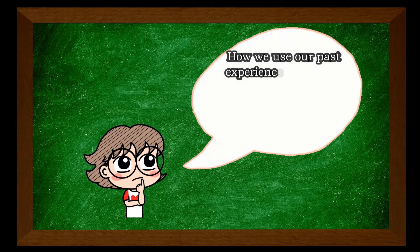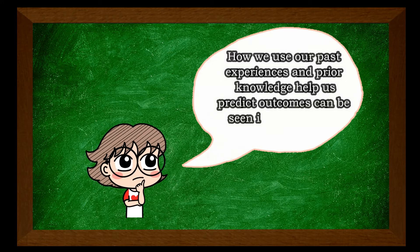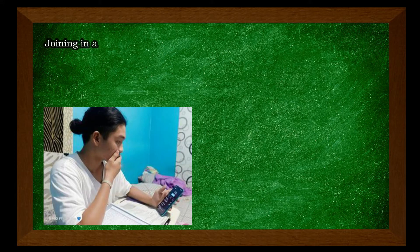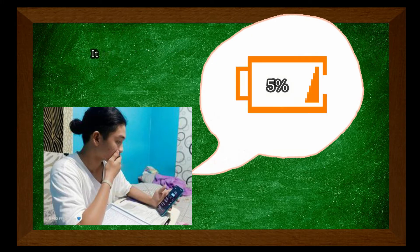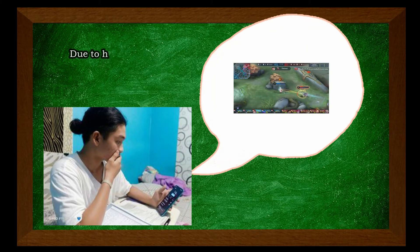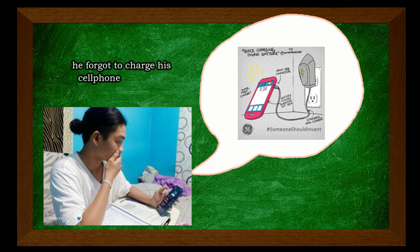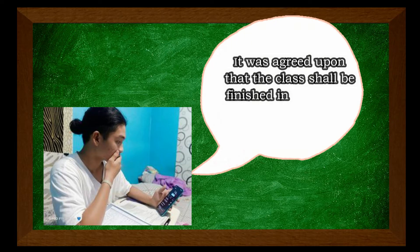How we use our past experiences and prior knowledge helps us predict outcomes can be seen in the following situations. Joining in a virtual class, Charles looked at the battery on his cell phone. It was at 5%. Due to his addiction to mobile games, he forgot to charge his cell phone last night.